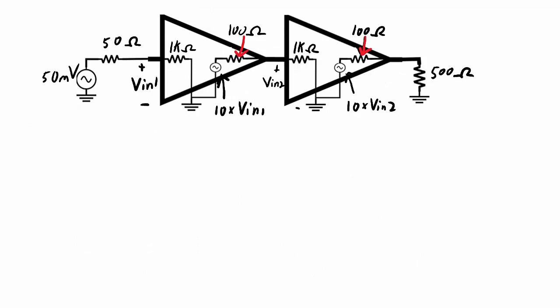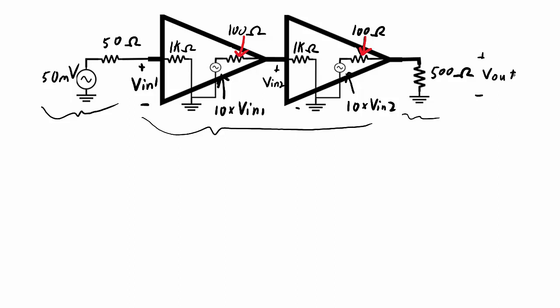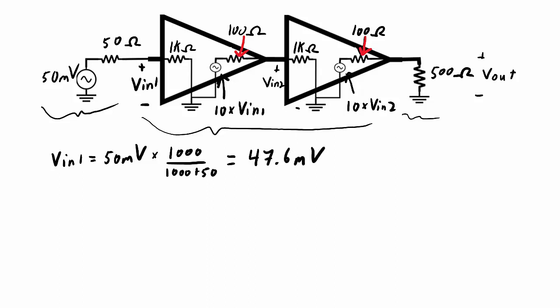Now let's look at an example where I have two amplifier stages. The input and output are the same, but now I have two identical amplifier models cascaded back to back. We want to calculate the output voltage — the voltage across the 500 ohm resistor. I can do this stage by stage, and then I'll show another way to remodel this as a single amplifier stage. Vin1 will be the same as before: the 50 millivolt signal times the voltage divider between the 1 kilohm input impedance and 50 ohm source impedance, working out to 47.6 millivolts.